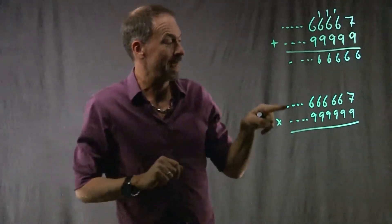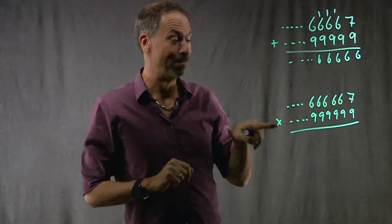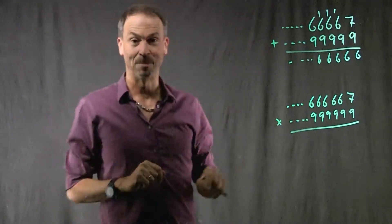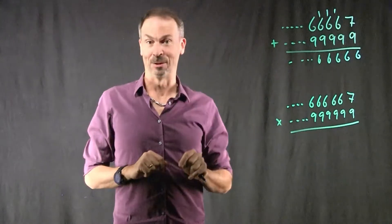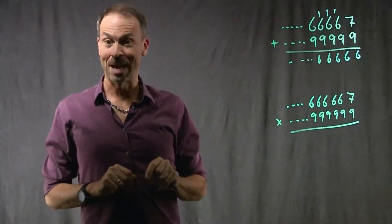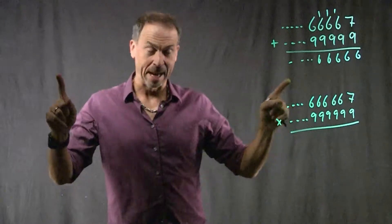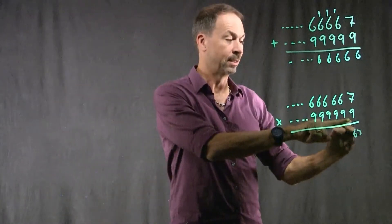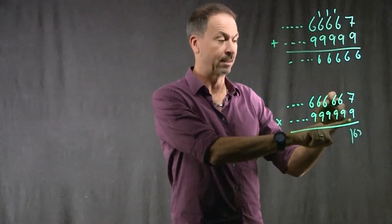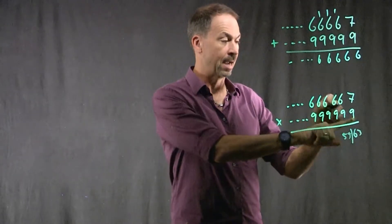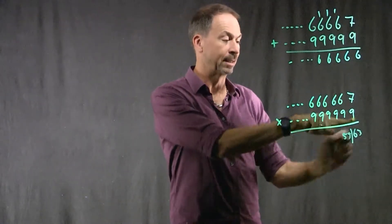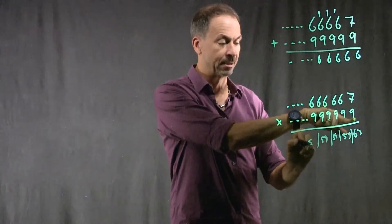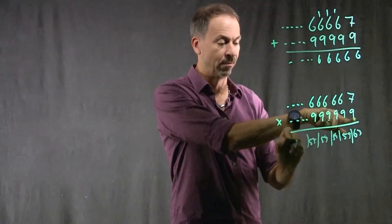What could be more interesting: take our fraction 1/3 and multiply by negative 1. We should get negative 1/3. I'll do long multiplication. 7 times 9 is 63 in the units, then 9 times 6 is 54 in the tens, 9 times 6 again in the hundreds — 54 — then 9 times 6 in the thousands, 54. Then 54, forever.